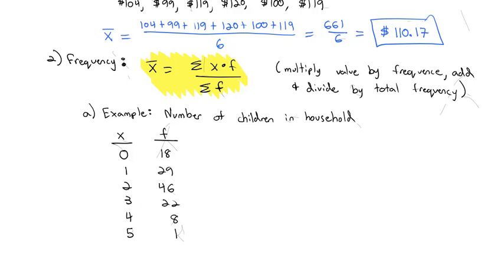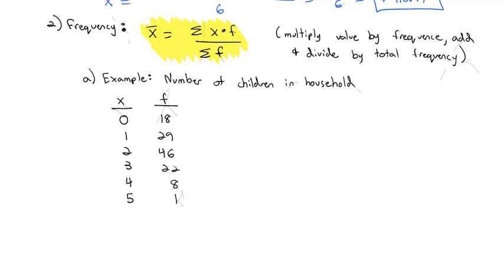To find the average, the formula says I need to take that individual value times the frequency. So I'm going to make a new column that shows that product x times the frequency. 0 times 18 is 0, 1 times 29 is 29, 2 times 46 is 92, 3 times 22 is 66, 4 times 8 is 32, and 5 times 1 is 5. The formula says we want the sum of the x times the frequencies. So I'm going to add them all up and we get 224.